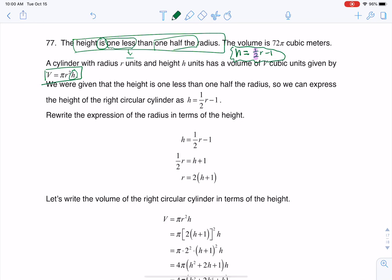So if I wanted to solve for the radius, if we had h equaling one half r minus 1, well, I could multiply everything by 2. I would get a 2h over here, right? I would get one half times r would just be r, and this would be r minus 2.